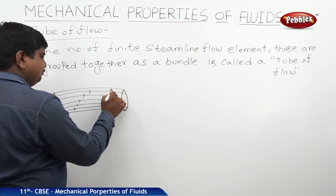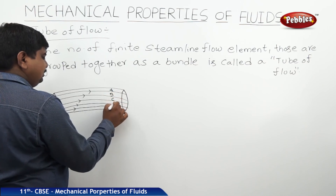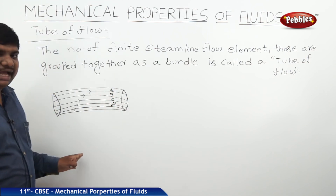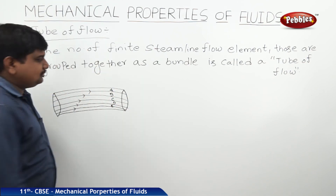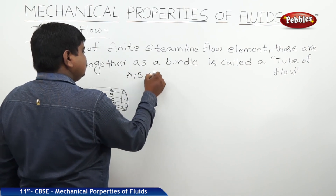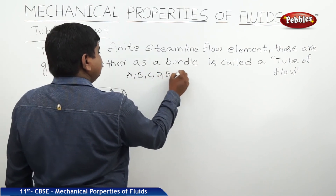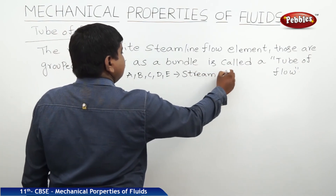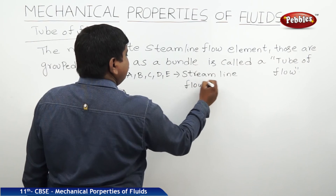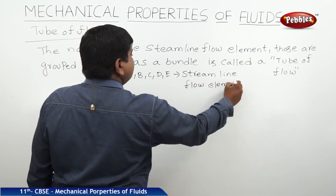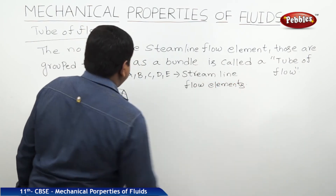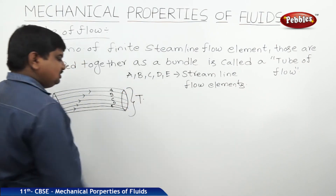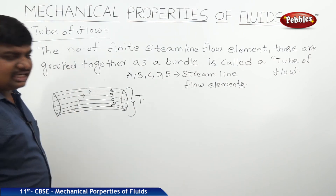This is A, B, C, D, E — the streamline flow elements mentioned in this diagram. Let us label this tube as T, so this T is called the tube of streamline flows.